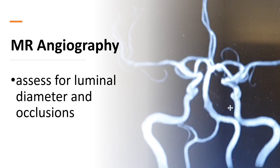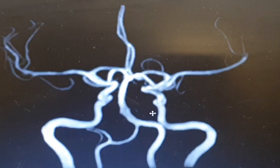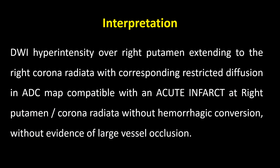MR angiography may demonstrate luminal diameter, occlusion, or stenosis. When interpreting the MRA, one must correlate the site of infarction with its corresponding blood supply. For this case, the right putamen is supplied by the anterior circulation, particularly the middle cerebral artery. In conclusion, there is a DWI hyperintensity over the right putamen extending to the right corona radiata with corresponding restricted diffusion on ADC map, compatible with an acute infarct at the right putamen and corona radiata, without hemorrhagic conversion and without evidence of large vessel occlusion.